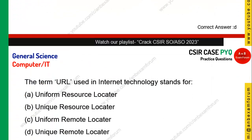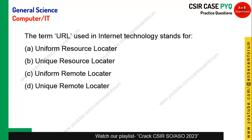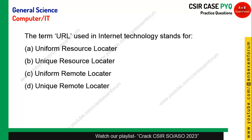On the internet we use the term URL. What does URL mean? It is Uniform Resource Locator. Option A is the correct answer. It is not 'unique reform resource locator' as some people are answering. Option A, Uniform Resource Locator, is correct.